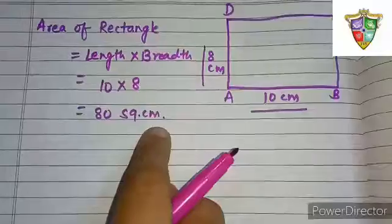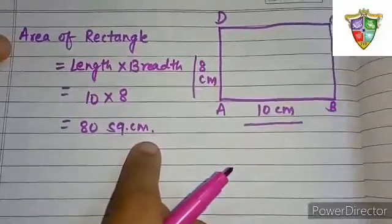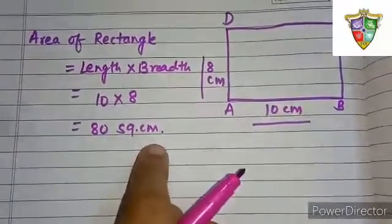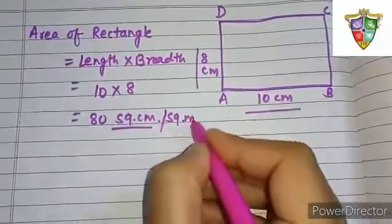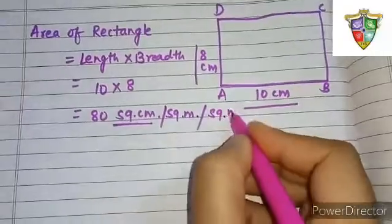You have to remember that the unit for area of any figure, rectangle or square, has to be square cm, square meter, or square millimeter.